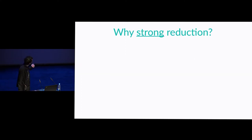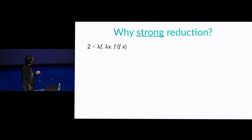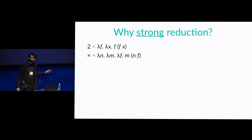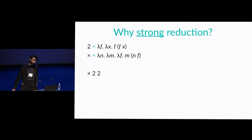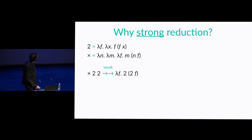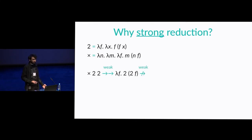Now let's proceed with strong — why we are interested in strong reduction. As an example, let's consider Church numerals. Let's take Church two, which is a function that applies a given function twice. In Church arithmetic, we can implement multiplication just as a function composition. Now let's try to compute two times two. In so-called weak reduction, we can substitute the two twos for n and for m. But is that an answer? Because in weak reduction, we cannot go further — we don't reduce under lambdas.